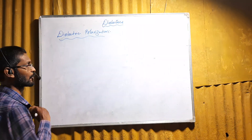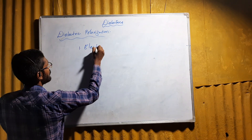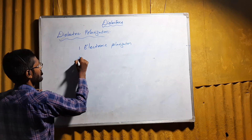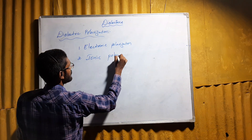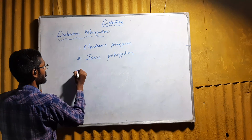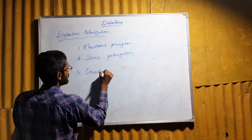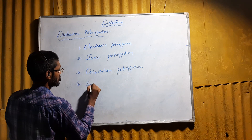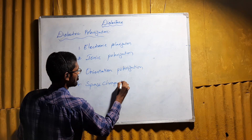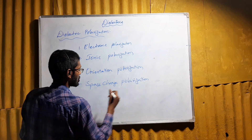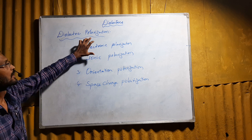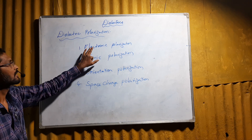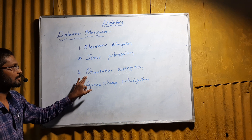In dielectrics, dielectric polarization is of four types: one is electronic polarization, second is ionic polarization, third is orientation polarization, and fourth is space charge polarization.